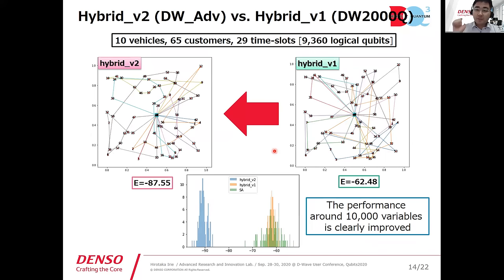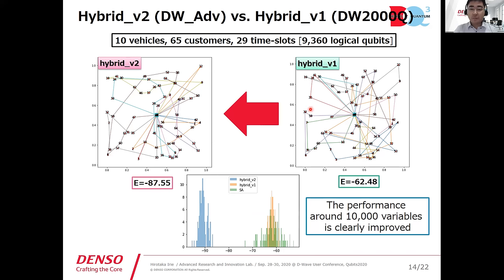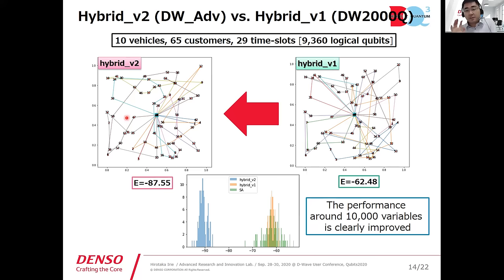Commenting on performance: comparing Hybrid V2 and the previous Hybrid V1, there is improvement in the energy. Around 10,000 variables — the maximum bound for both V1 and V2 — we get a better solution in this regime. Hybrid V1 showed some random routes, but Hybrid V2 is okay. That's our result.